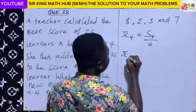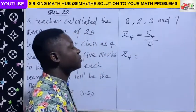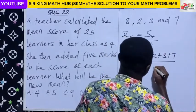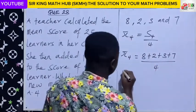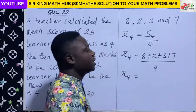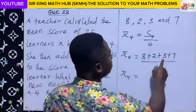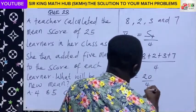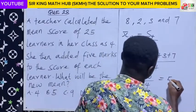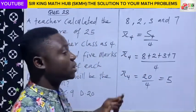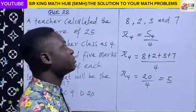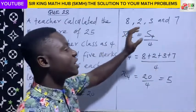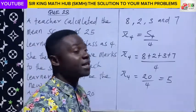The mean of the four numbers will be equal to eight plus two plus three plus seven, all divided by four. Eight plus two is ten, plus three is thirteen, plus seven is twenty. So twenty divided by four gives us five. That is how we calculate the mean: sum up the numbers and divide by the count.